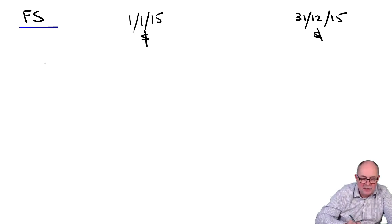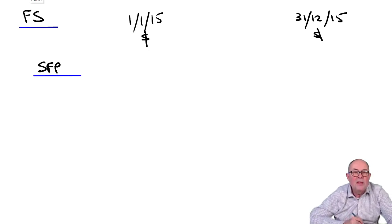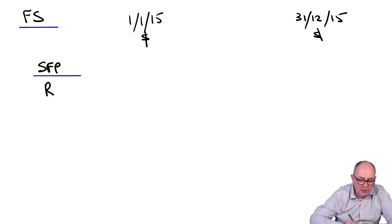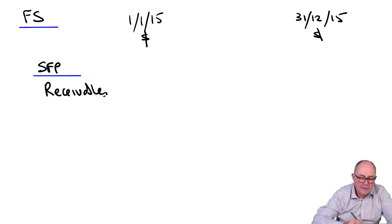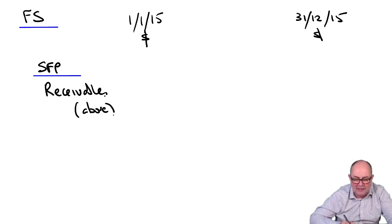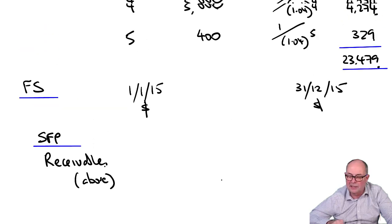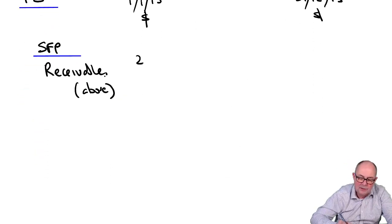We're going to look first in the SoFP. In the SoFP, the lessor will book a receivable. And we just worked that out. That's the opening figure that we were struggling to get: 23,479.